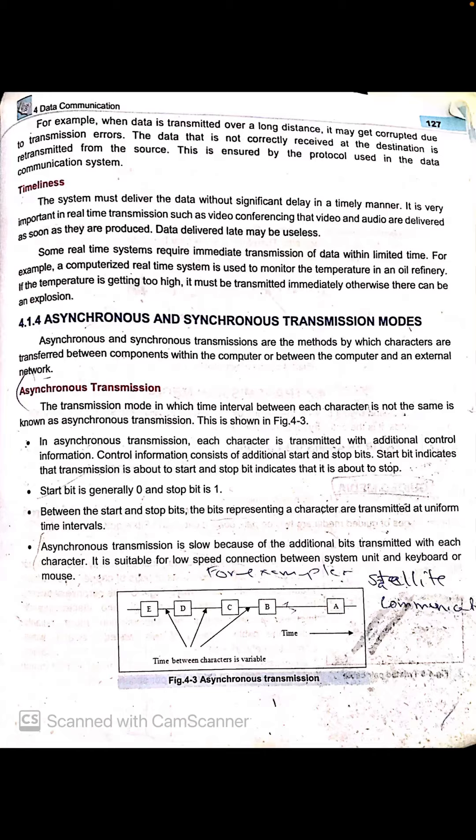Asynchronous transmission is slow because of the additional bits transmitted with each character. It is suitable for low-speed connections between the system unit and devices like a keyboard and mouse. The extra start and stop bits add overhead. Think of it like a student going to the principal's office carrying extra things in both hands — the additional load slows you down. So the additional start and stop bits cause the speed to slow.